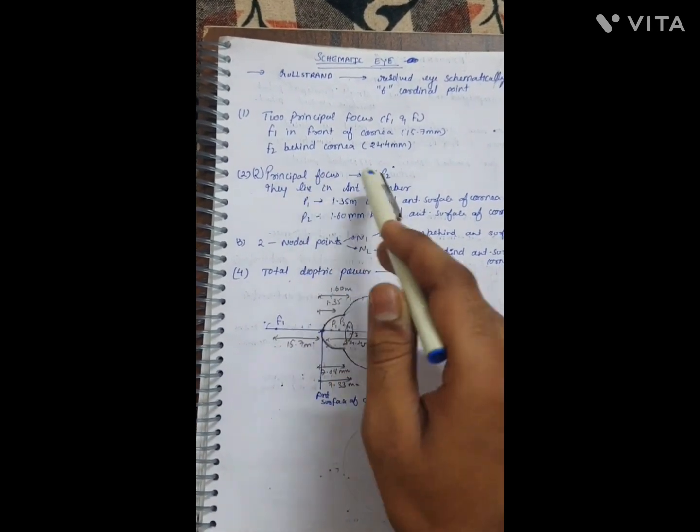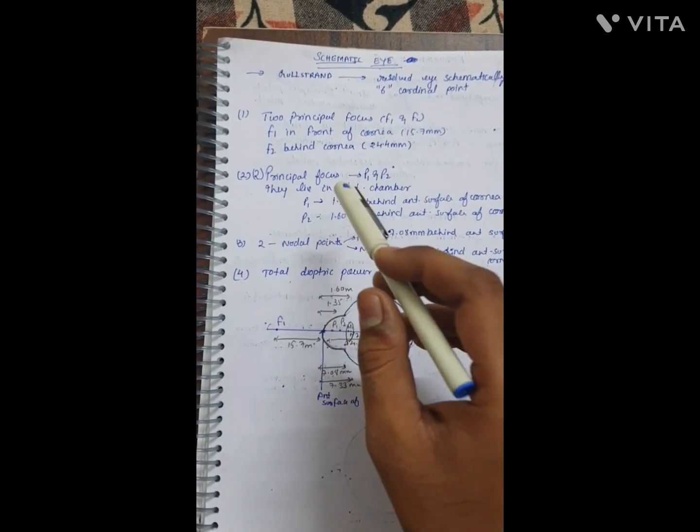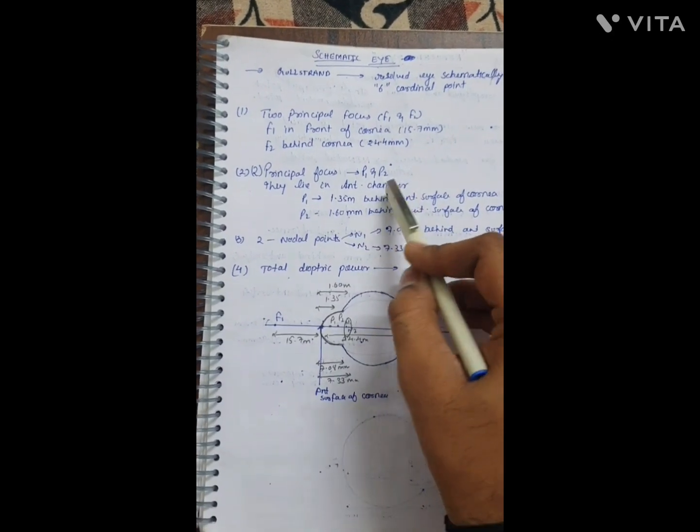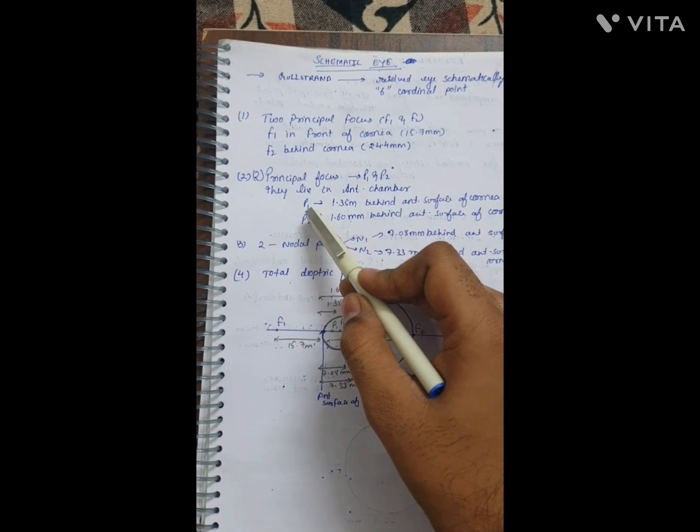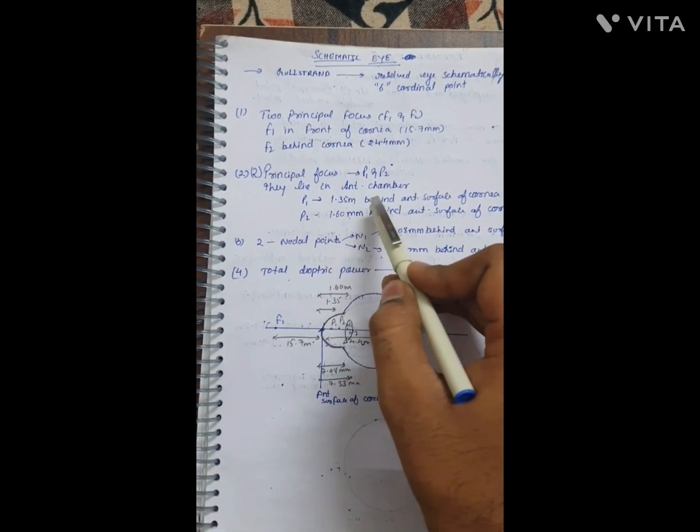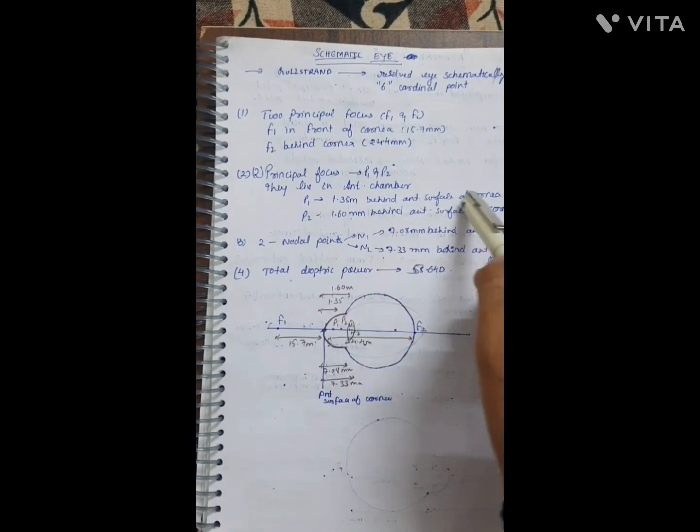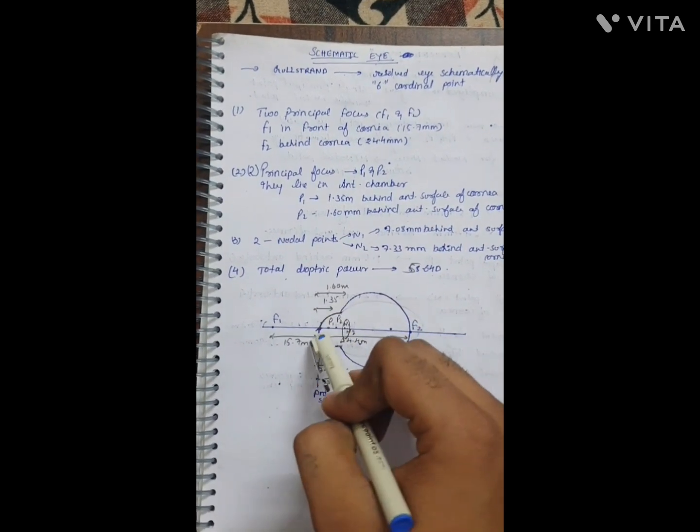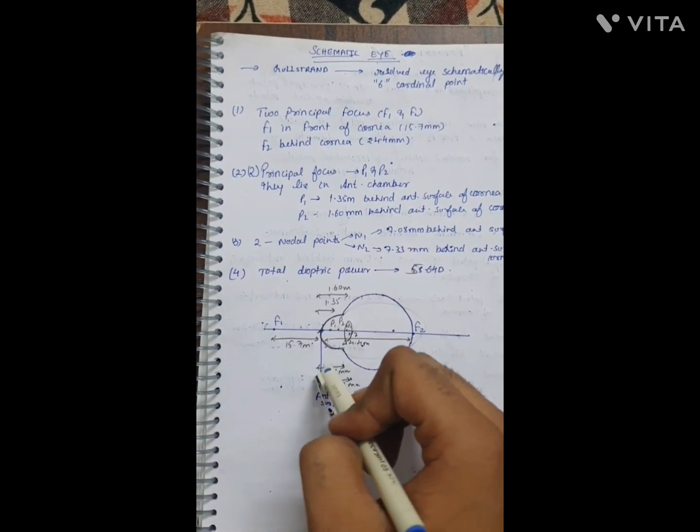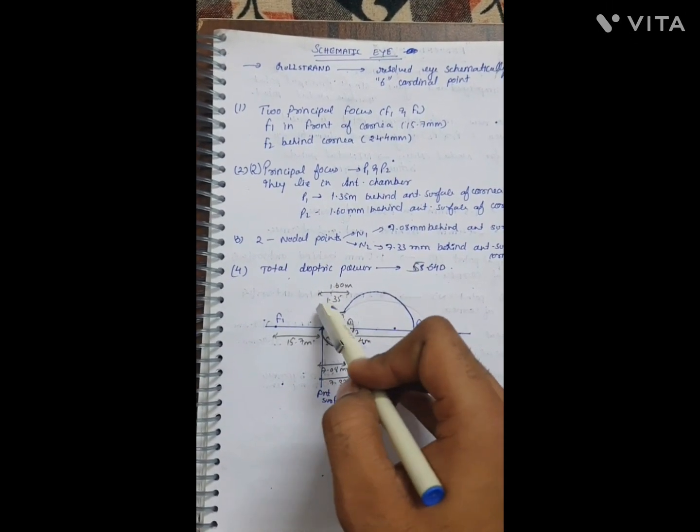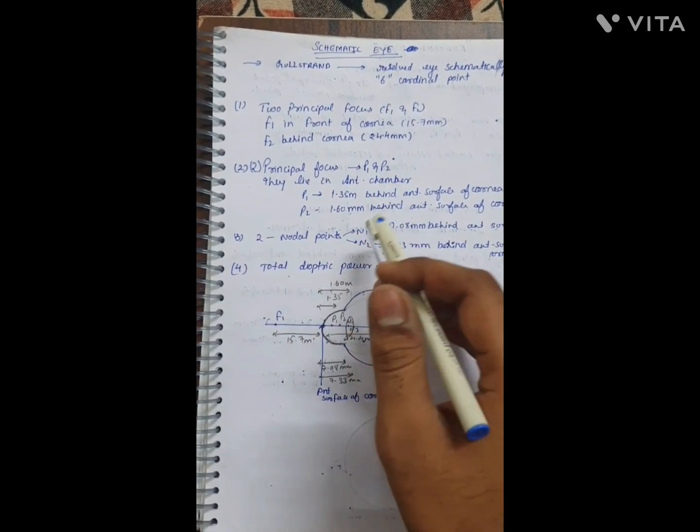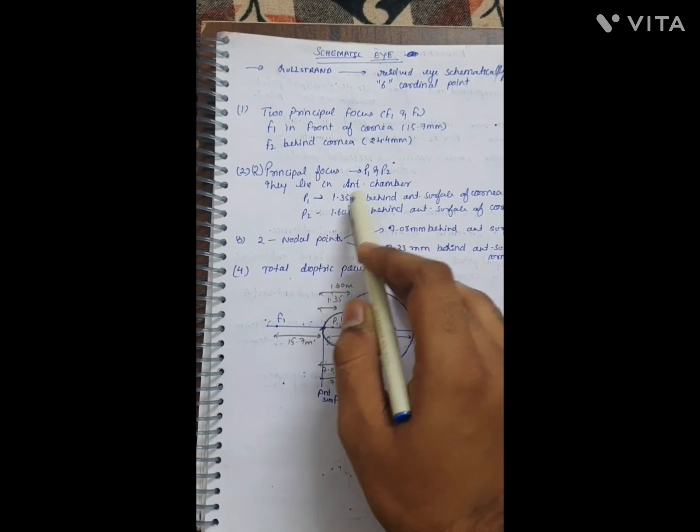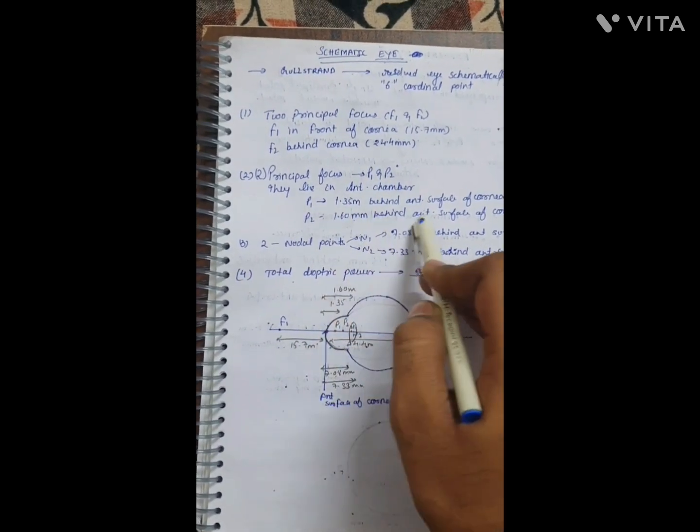Now for the principal points P1 and P2, which lie in the anterior chamber. P1 lies 1.35 millimeter behind the anterior surface of cornea, and P2 lies 1.60 millimeter behind the anterior surface of cornea.